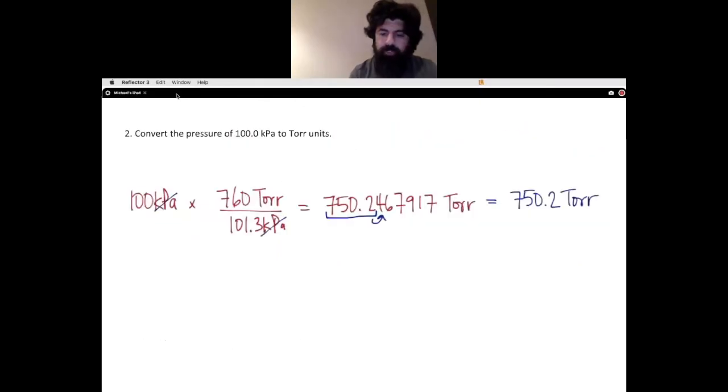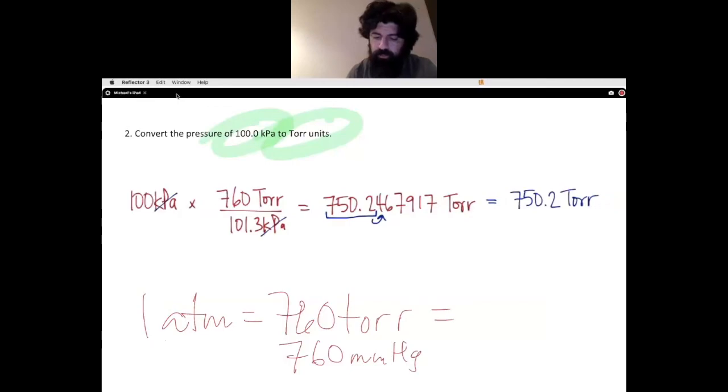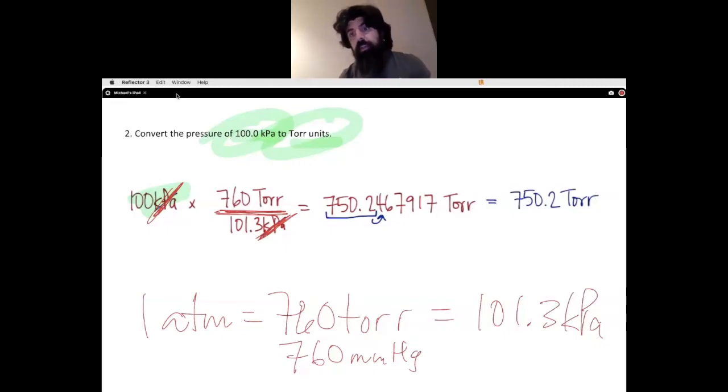Here's question number two. We've got 100 kilopascals, we want to convert it to Tor units. What you need to remember is that one atmosphere is equal to 760 Tor, or 760 millimeters mercury, which is equal to 101.3 kilopascals. We started off with our 100 kilopascals from the question, and we are trying to convert to Tor units. To do that, we need to cross out the kilopascals, and we create this set of fractions. Whatever unit will cancel out has to be at the bottom. What is the relation between kilopascals and Tor units?